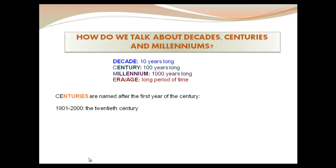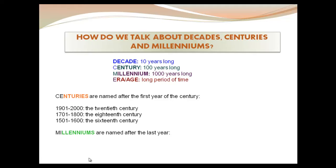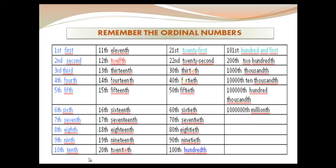The centuries are named by the first year of the century — for example, the 20th century, the 18th century, or the 16th century. Notice that centuries are read with the ordinal number. Millennia are named after the last year of the millennium — for example, the second millennium or the third millennium. It's important to remember the ordinal numbers.